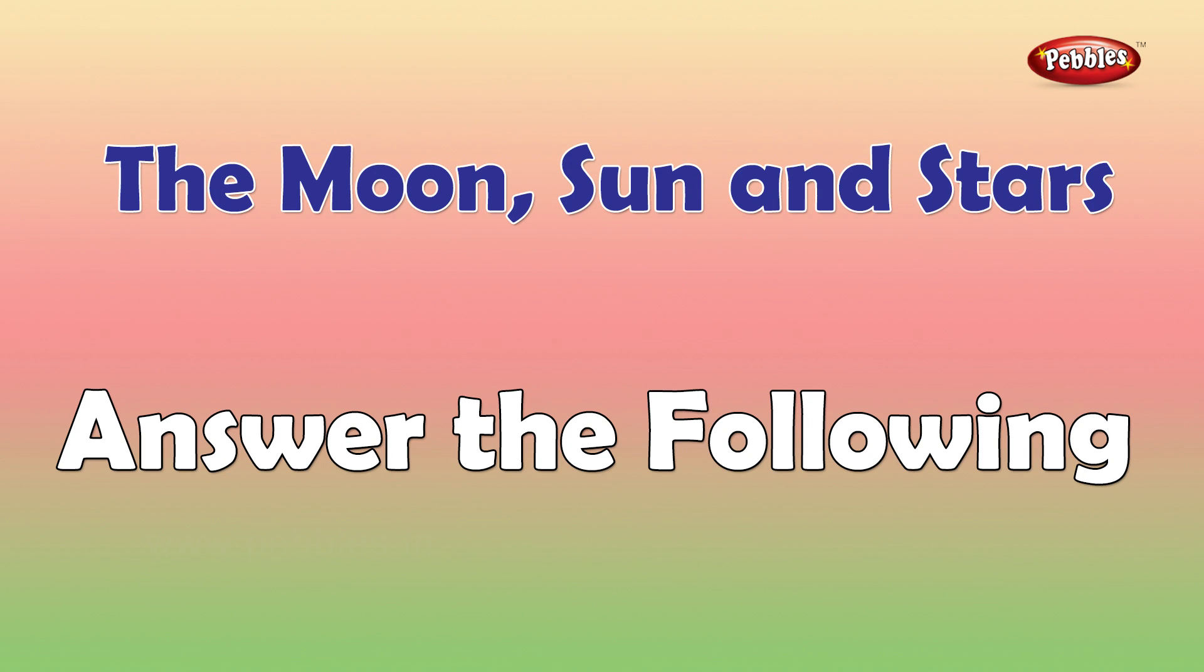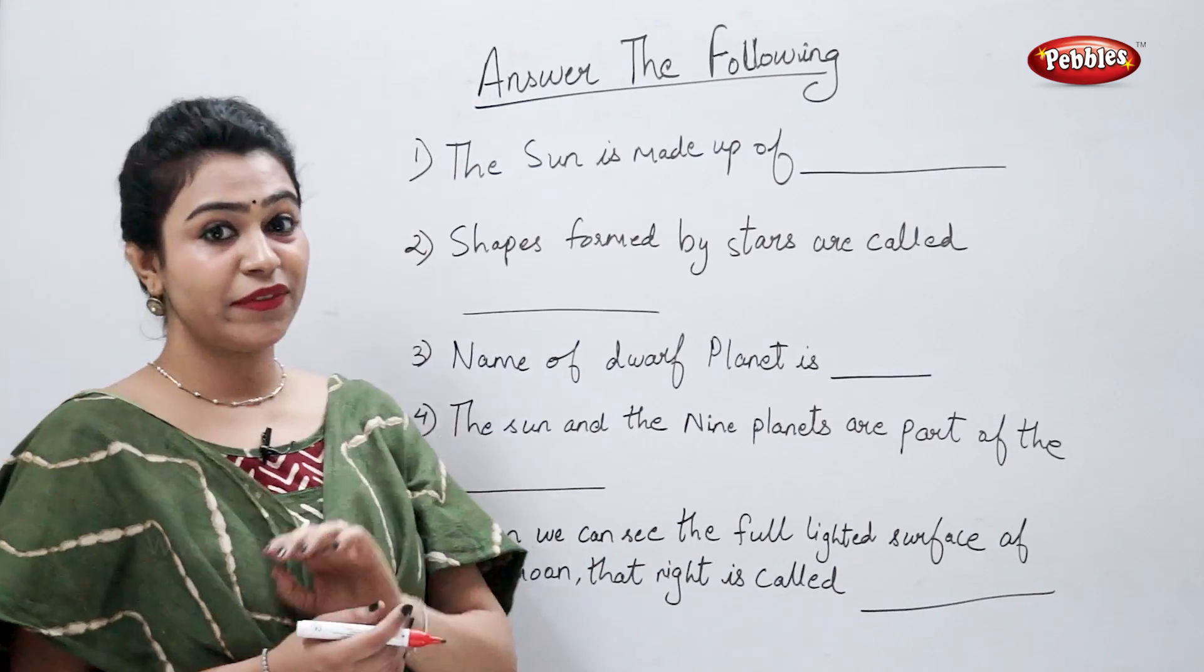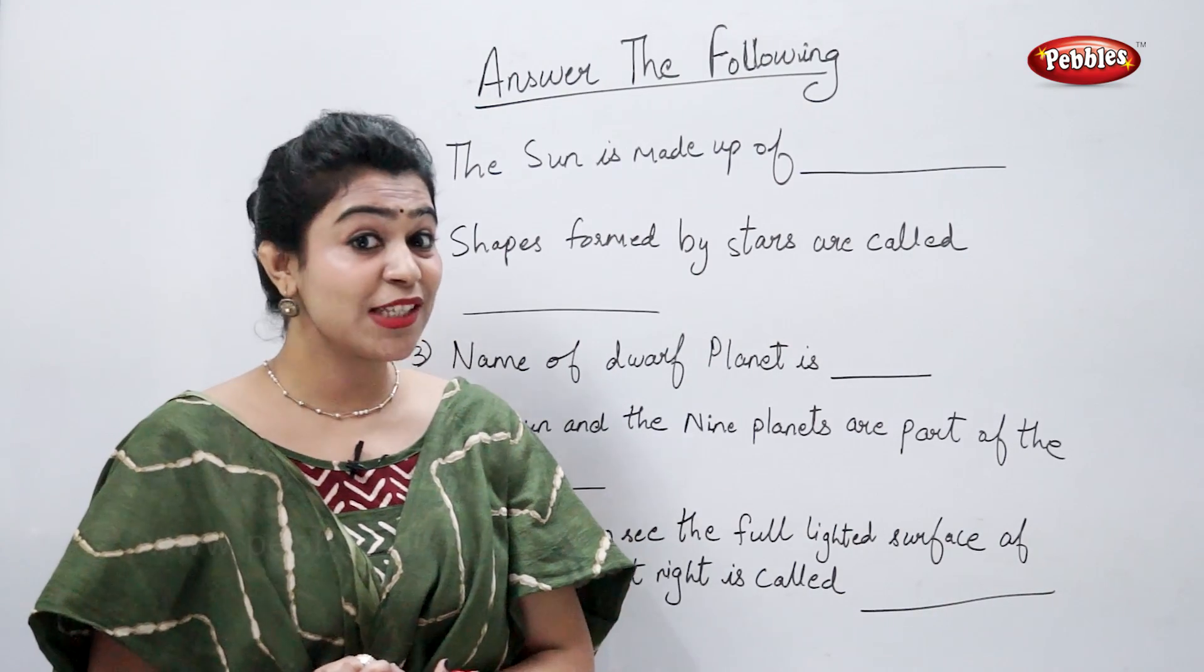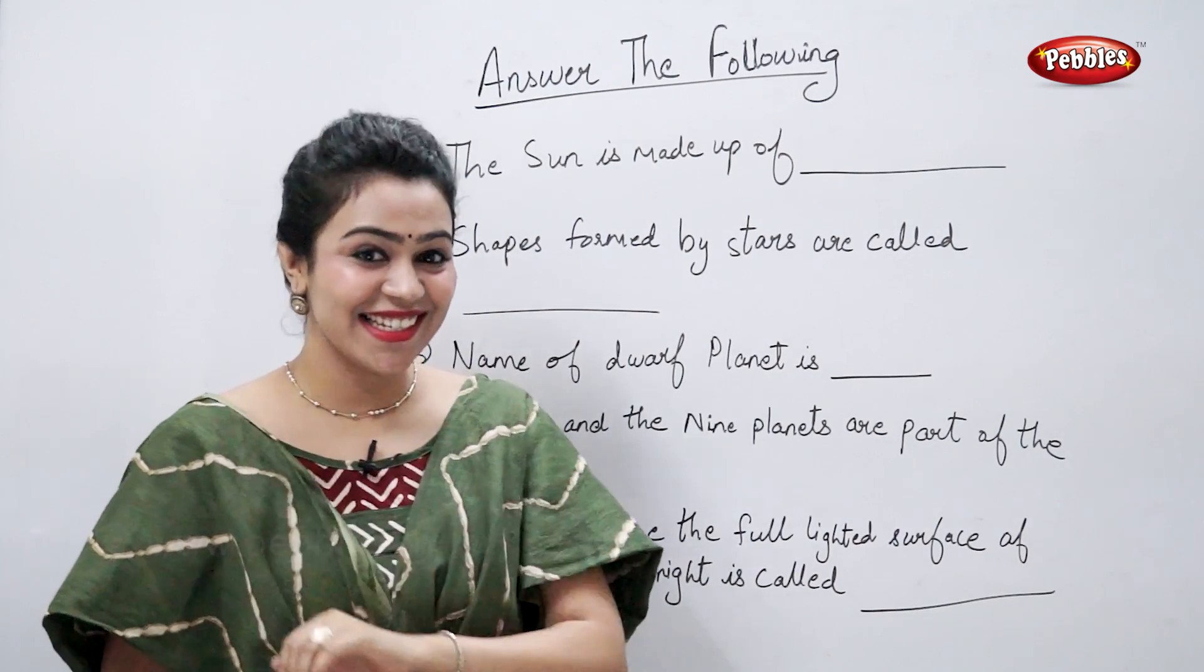Answer the following. The sun is made up of, the sun is made up of hot gases, right.